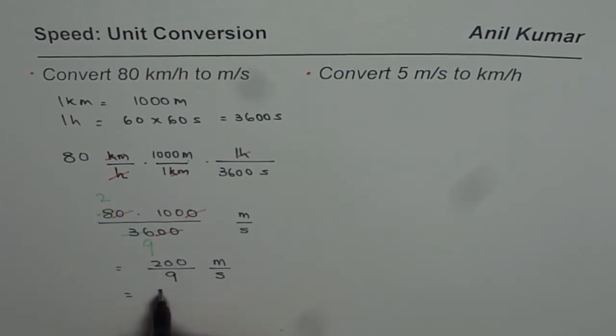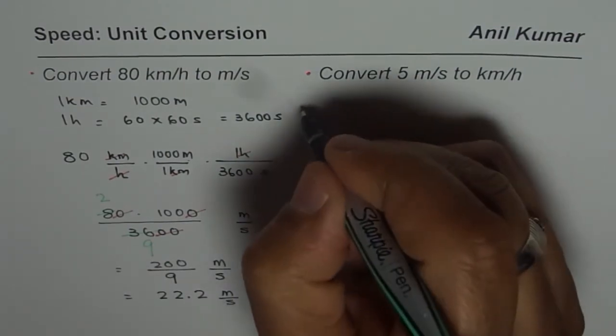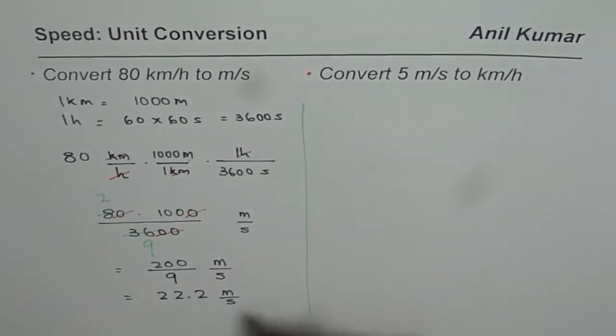You could write it in decimals also. Divide by 9 using calculator. 9 times 2 is 18, then you get 20. So approximately 22.2. So we get this as approximately 22.2 meters per second. You get an idea? So that is a way to convert units. I hope the steps are absolutely clear.